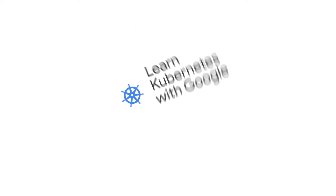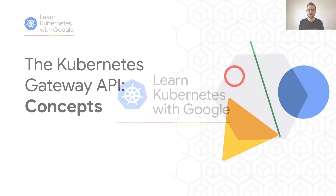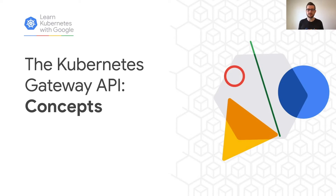Welcome to this episode of Learn Kubernetes with Google. My name is Rob Scott, and I'm a software engineer at Google. Today we're going to be discussing some of the key concepts in the Kubernetes Gateway API.